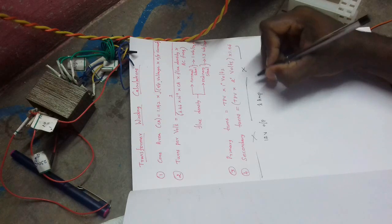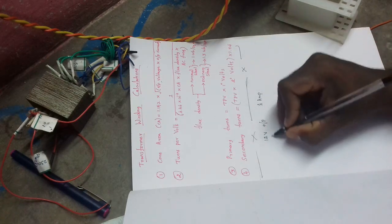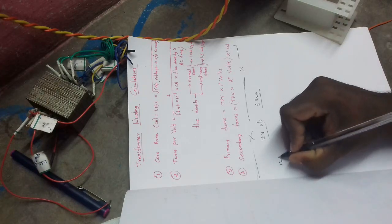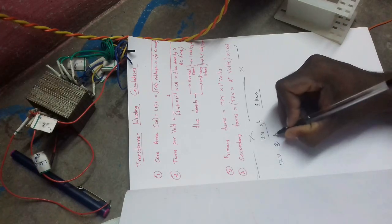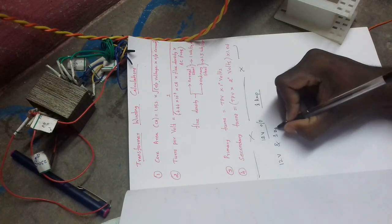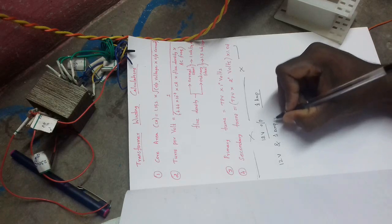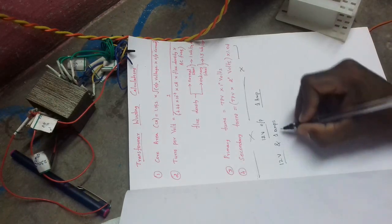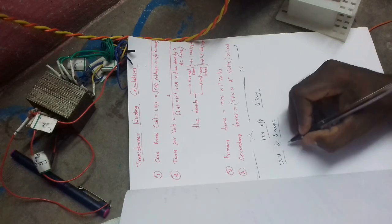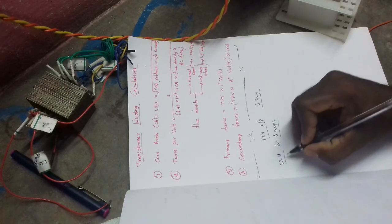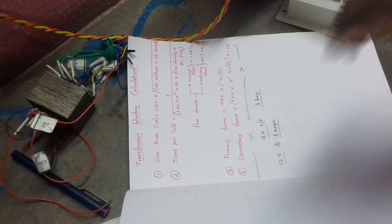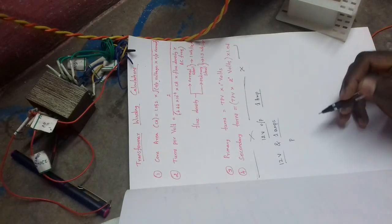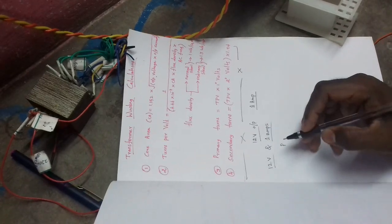1A current. 100V output is 1A. 12V is 1A. It is a high power. Is it 100V output? The 1A will be 2000V output.